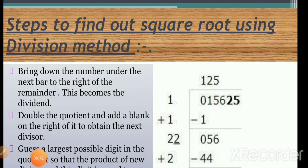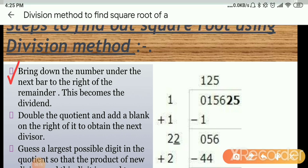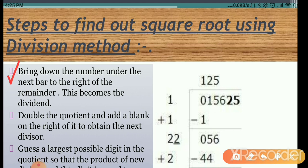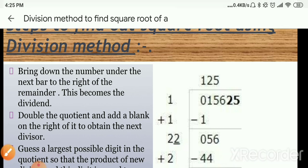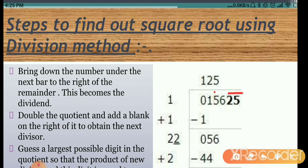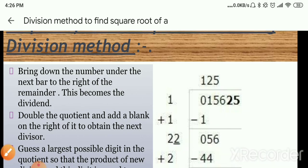Step 4: Bring down the number under the next bar to the right of the remainder — this becomes the new dividend. The first bar was on 25, the second on 56, and the third on 01. We have solved 01. Now the next number under a bar is 56, so we write 56 to the right of the remainder 0. This new number 056 becomes our dividend.